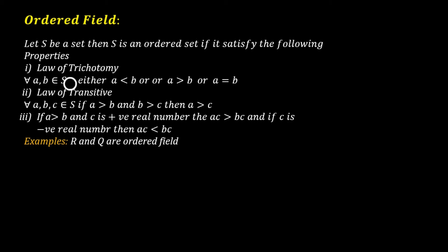It is for all A, B belong to S. Of course, S is a non-empty set. So when we take two elements from a non-empty set S, then either A is less than B, or A is greater than B, or A is equal to B. So these are the three possibilities for a non-empty set which contain two elements A and B.